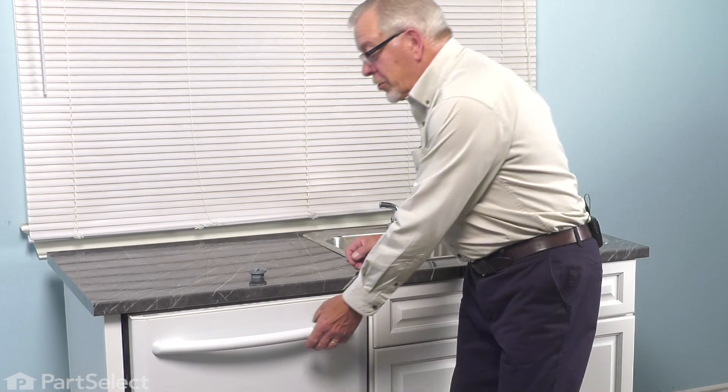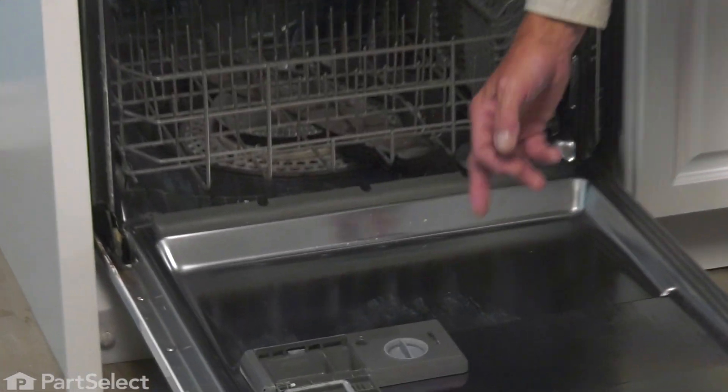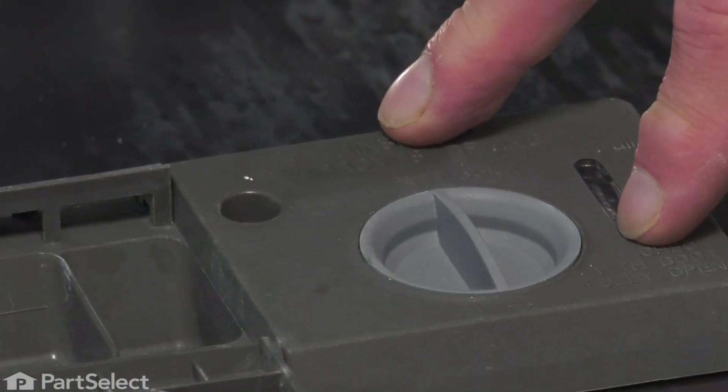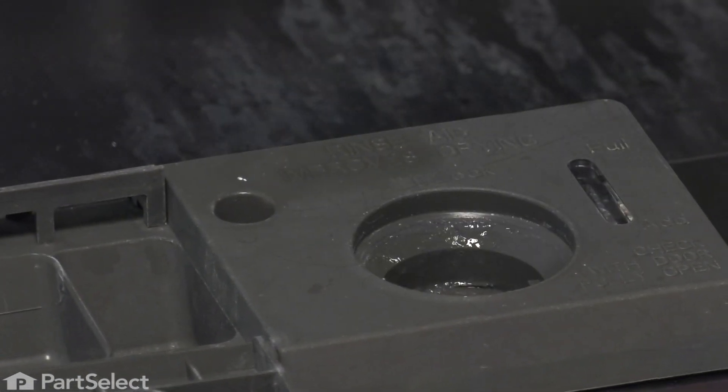To do this repair, we simply need to open up the dishwasher door completely. If the cap is still intact or attached to the rinse aid dispenser, we need to just turn and release that and discard the old one.